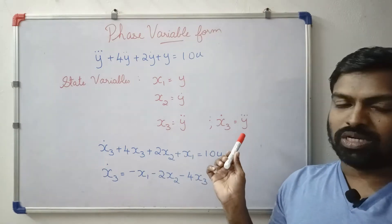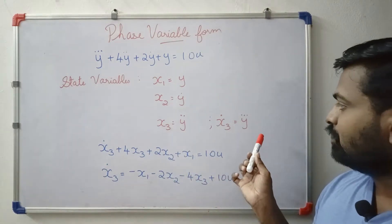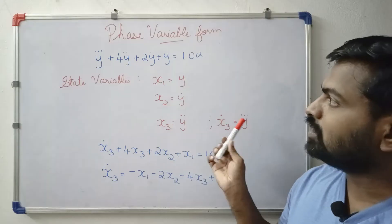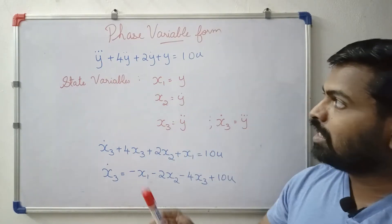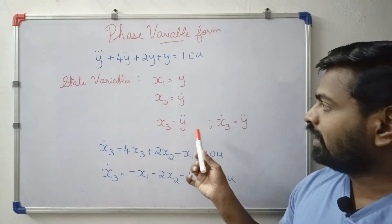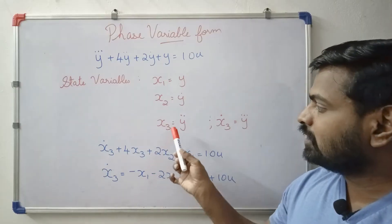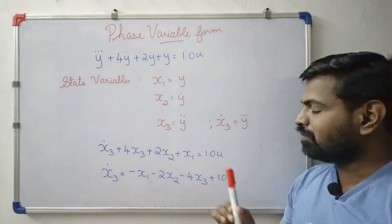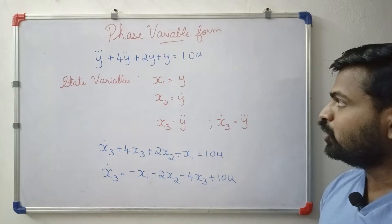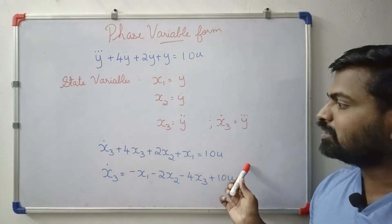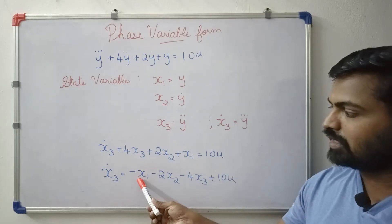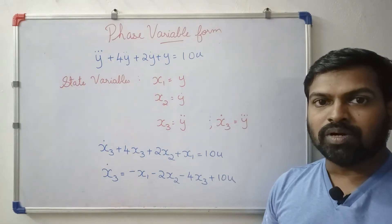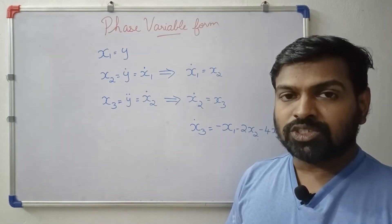The state equation is where x3-dot is equal to minus 2x2, and we substitute x2 plus x1 equals 10u. So x3-dot is equal to r minus 2x2 minus 4x3 plus 10u.